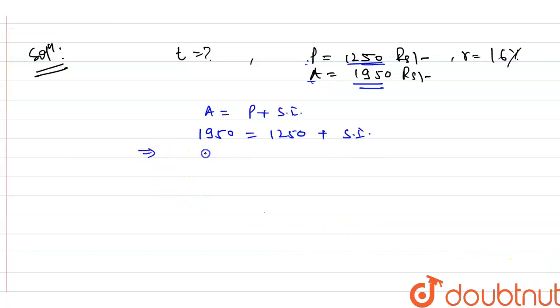Now we can reverse it again. 1250 plus simple interest, it will be equal to 1950 rupees. So from here, we can write it simple interest equal to 1950 rupees minus 1250 rupees.